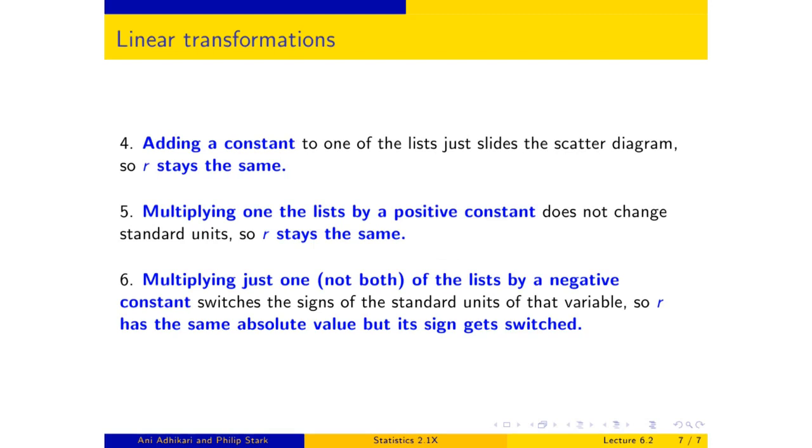So to summarize, r measures the degree of linear association. It is positive when the scatter diagram slopes up. It is negative when the scatter diagram slopes down. It is a pure number. It does not depend on the units in which you have measured your data. It does not depend on which you have chosen to put on which axis. Now, r is a quantity that's used a lot. And we will spend the next segment looking at it a little bit carefully to make sure that we use it appropriately. And then in the next section of the course, section 7, we will use it in calculations to estimate the value of one variable based on another.